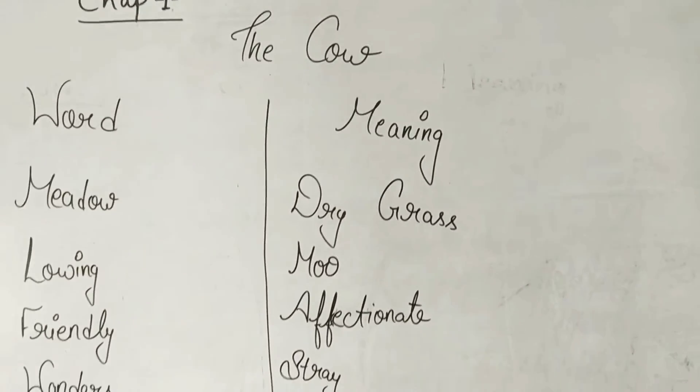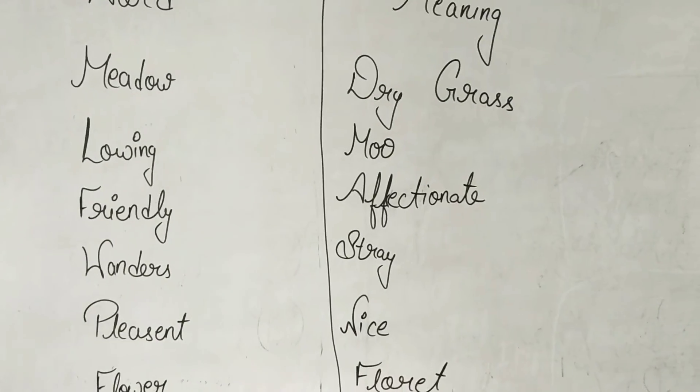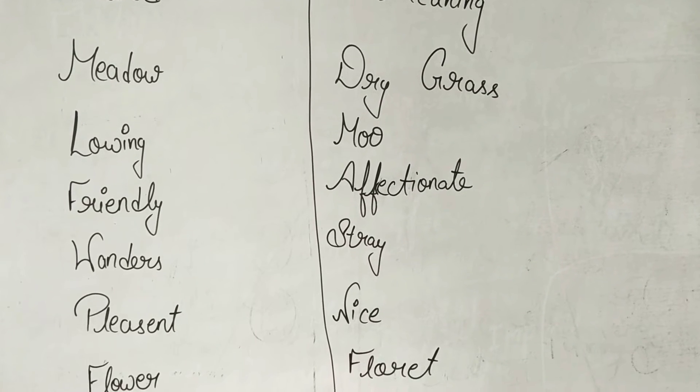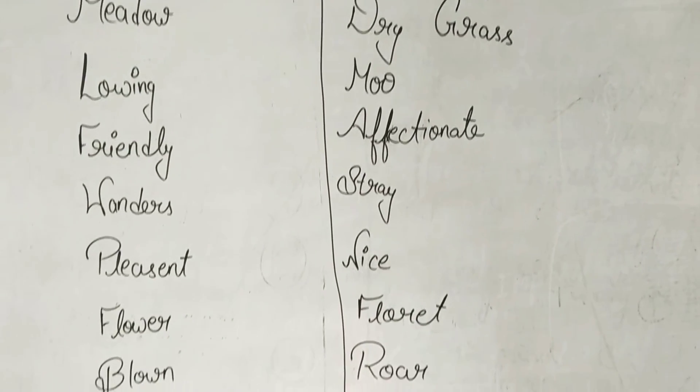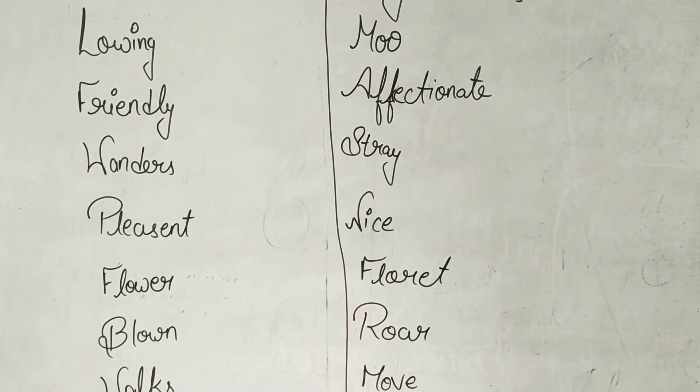Word meanings. Meadow means dry grass. Glowing means moon. Friendly means affectionate. Wanders means stray. Pletient means nice.